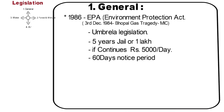Currently, the maximum fine that can be imposed on a polluting industry or other entities is 1 lakh, along with a jail sentence of up to 5 years. This also requires the government agencies to first file a complaint with a magistrate at the district level and secure a favorable order against the polluter.